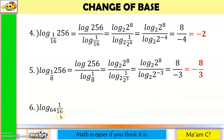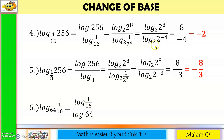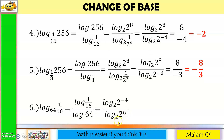Another one: the logarithm of 1 over 16 divided by the logarithm of 64. Now 1 over 16 is the logarithm of 2 raised to negative 4 to the base 2, while 64 is 2 to the 6th power, so the logarithm of 2 to the 6th to the base 2. The answer in my numerator is negative 4, and in my denominator is 6. In lowest terms, this is negative 2 over 3.